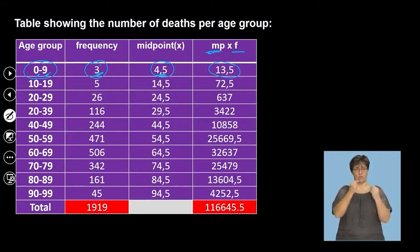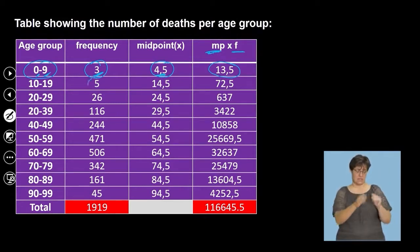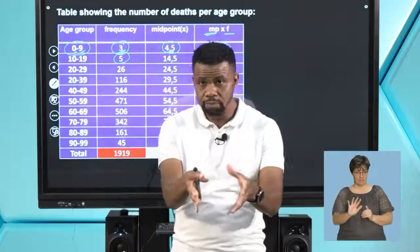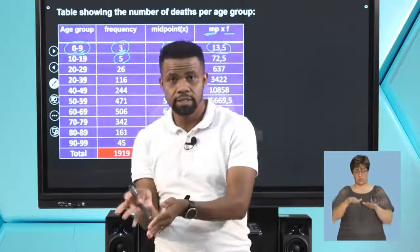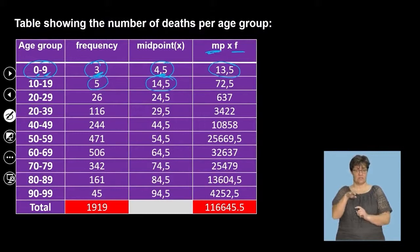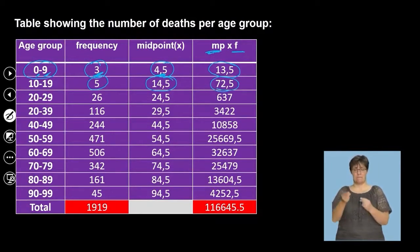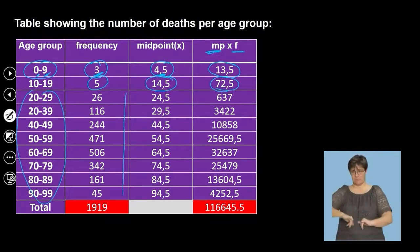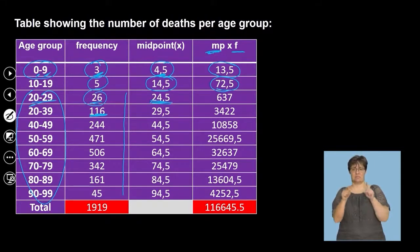We do this for each and every age group. For the age of 10 to 19, the frequency is 5, meaning 5 people between the age of 10 and 19 died from COVID-19. The midpoint is 14.5. Then we multiply to get midpoint times frequency. We similarly find the frequencies and midpoints for all the remaining age groups and multiply each pair.